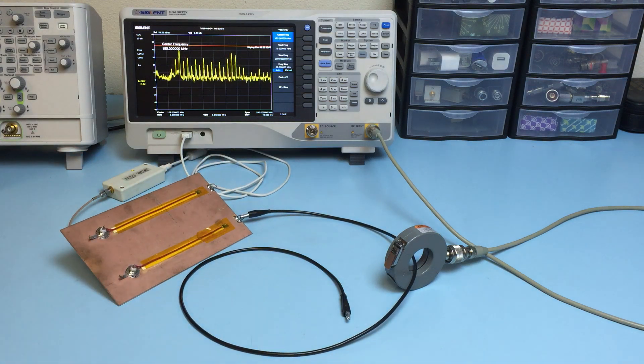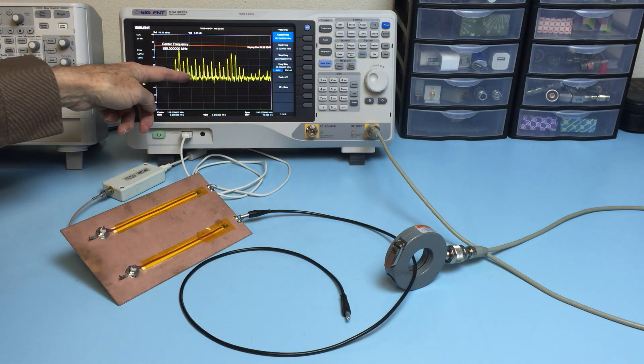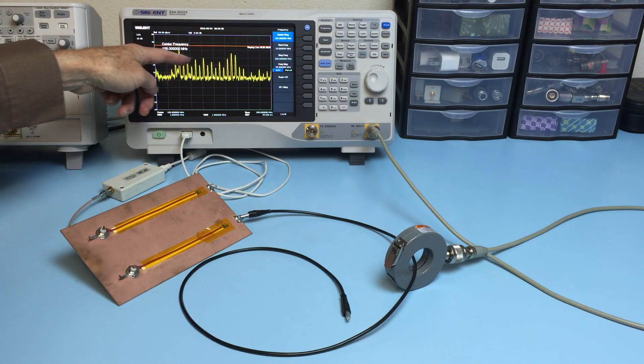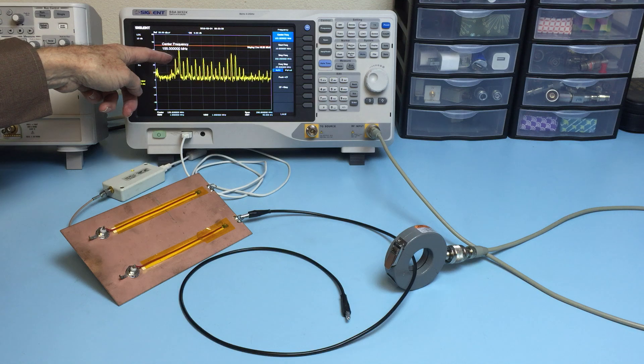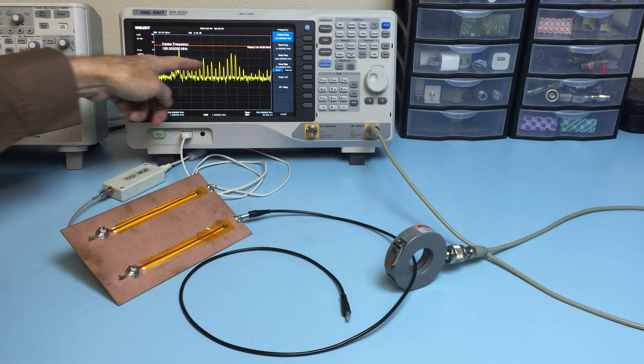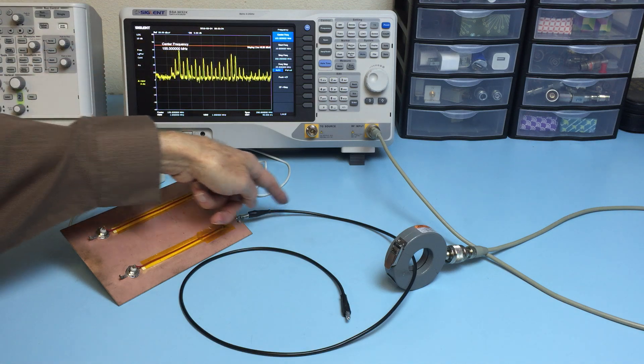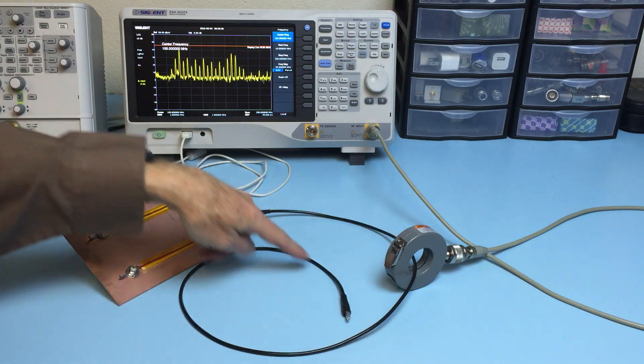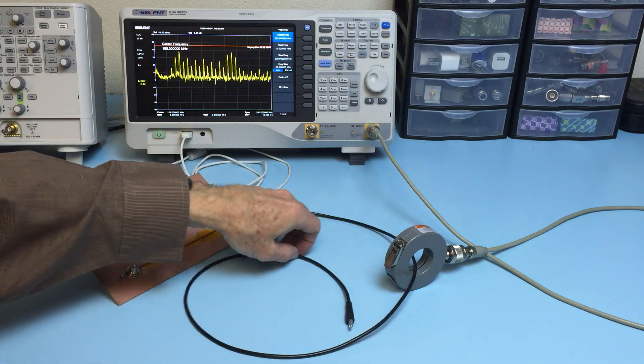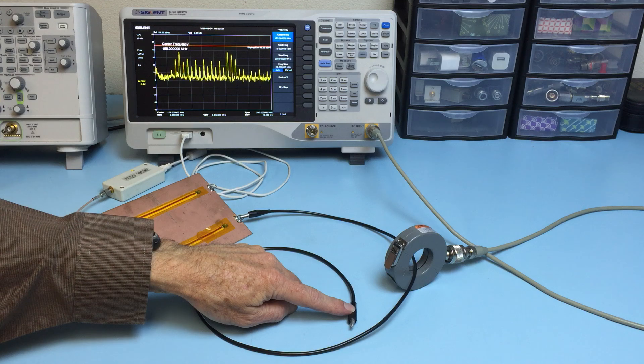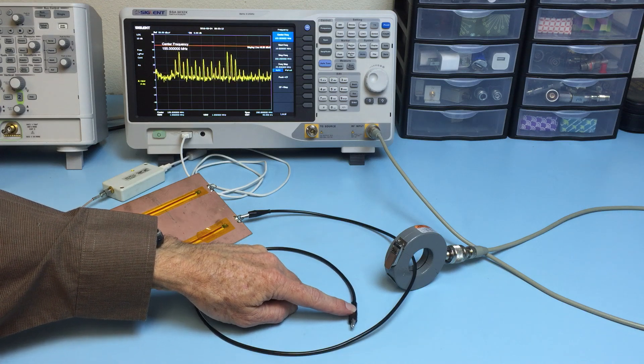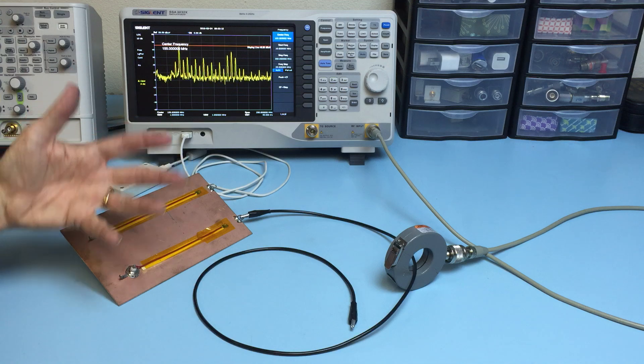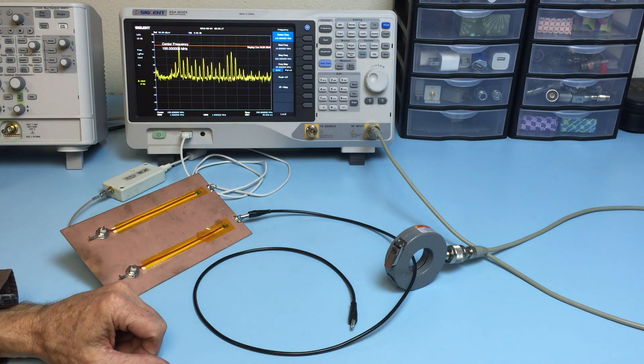The harmonic content has jumped up 20 to 30 dB. And all this harmonic content is RF currents flowing out along this simulated I-O cable and radiating out causing a radiated emissions failure.